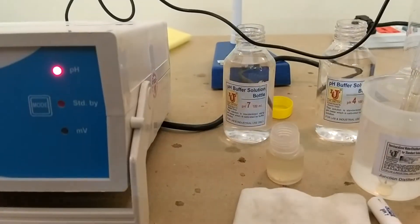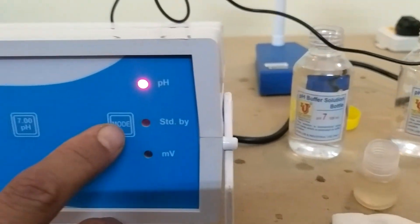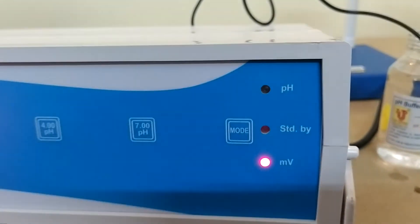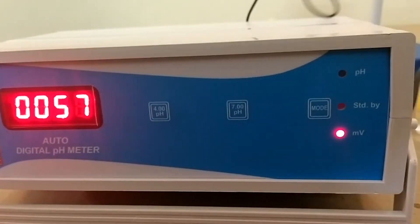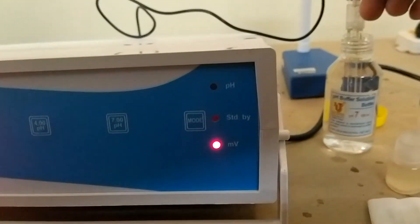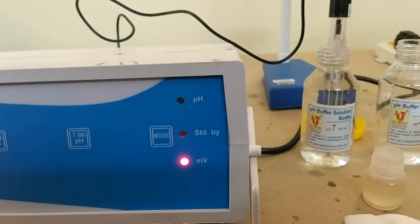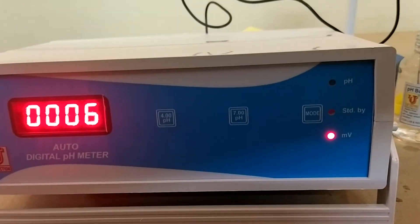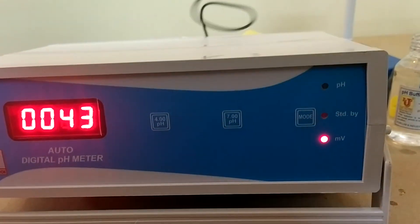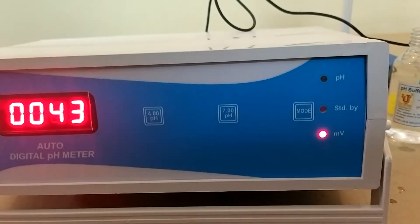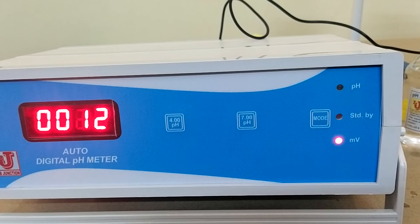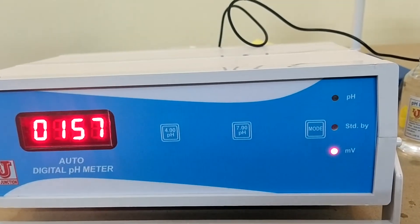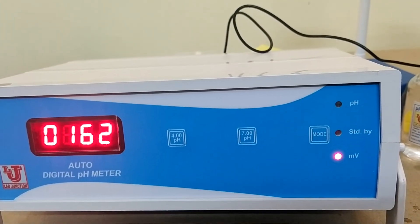If you want to do ORP, then you can do on millivolts. What are your millivolts comes on 7 pH buffer? 0. For 4, millivolts are in between of 150 to 200.